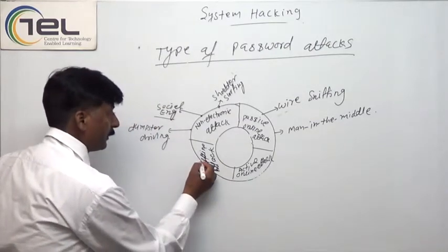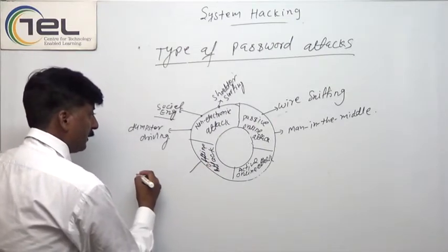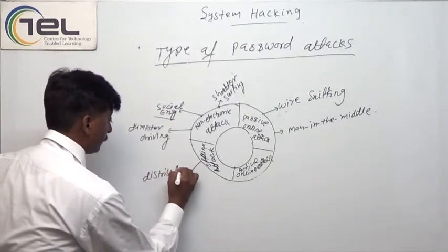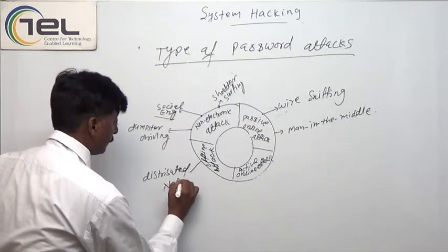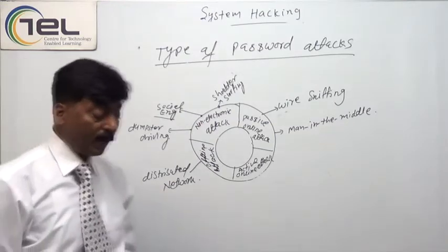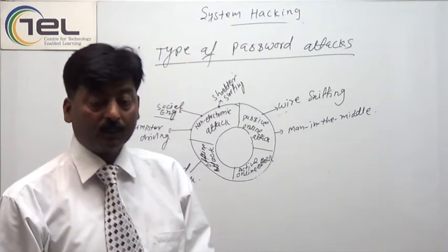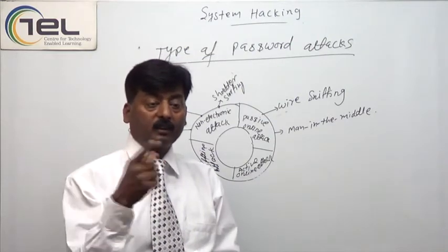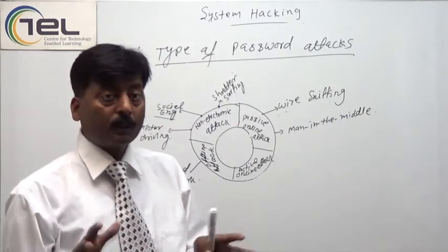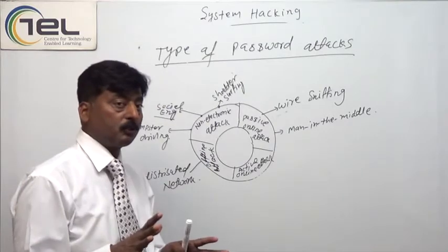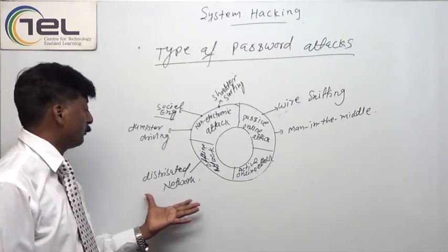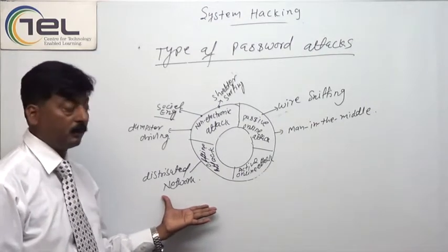Offline attacks are like distributed network attacks. In the distributed network or offline attack, the attacker's client machines monitor what type of network traffic is going over there, or tracking software is installed on a particular specific machine. By help of this particular software, it tries to access the entire network information. That is called the distributed network attack.